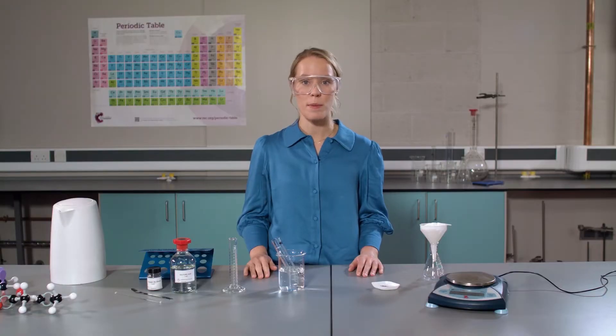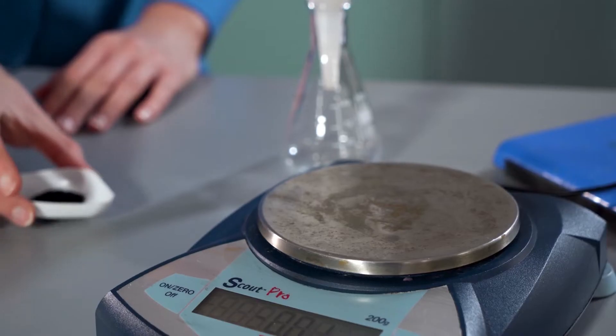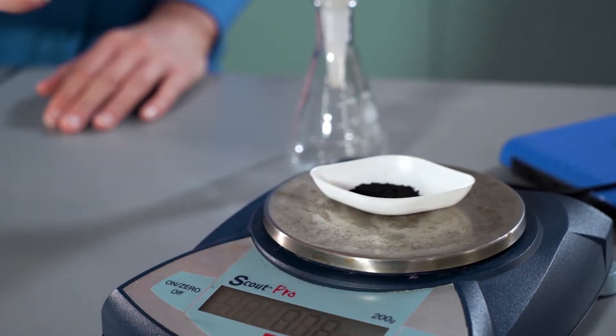While I wait, I will prepare the base. I need to measure out between 1.8 and 2 grams of black copper oxide powder using a measuring boat.